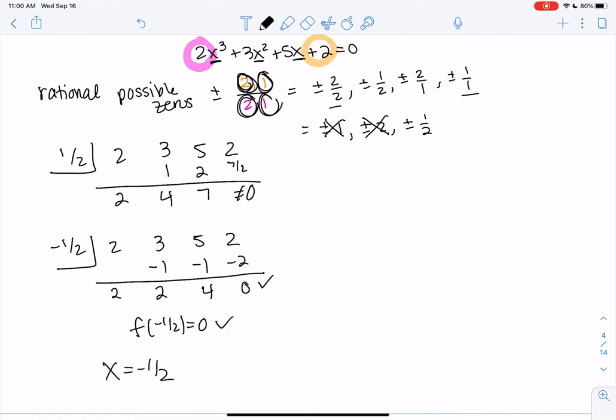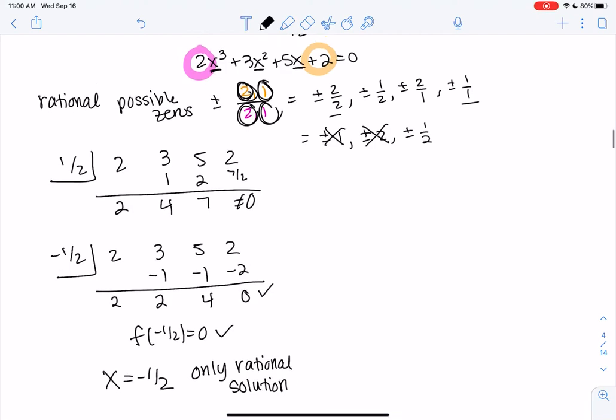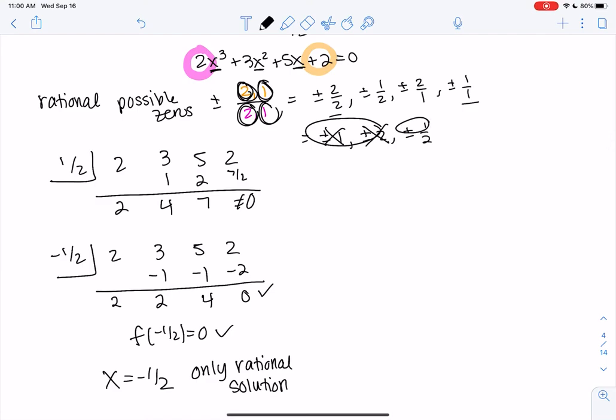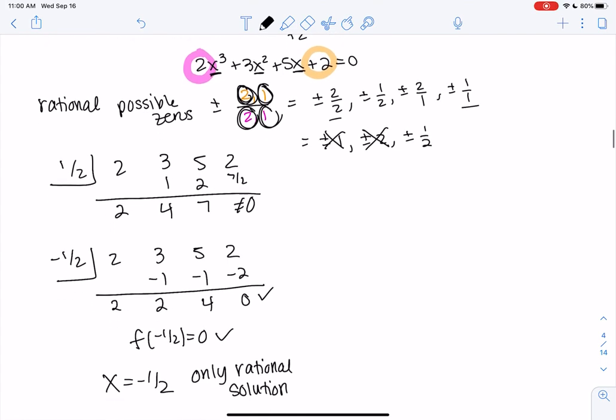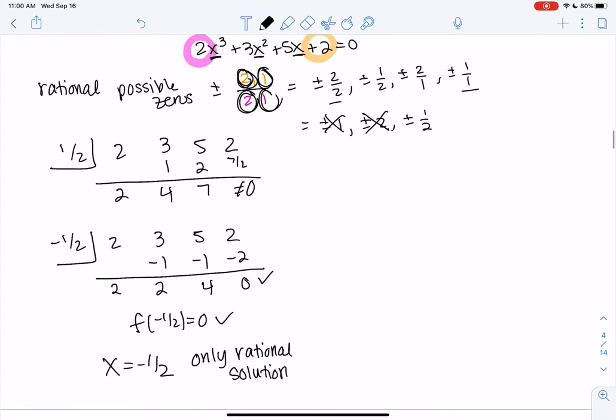So that means we have negative 1 half as a solution. It looks like that's maybe my only rational solution because we already tried all the other rational options. If we had rational, it would have been one of those other numbers. But since none of those worked, it just means we might have some real solutions that are not rational. So we can bring this down. It will be x minus negative 1 half. And then we started with x cubed. So now we're at x squared. 2x squared plus 2x plus 4 equals 0. And now that we're at a quadratic, we can go ahead and solve the quadratic.